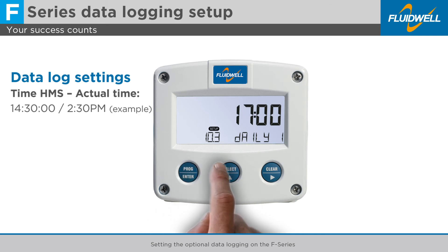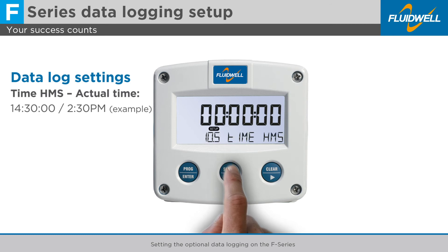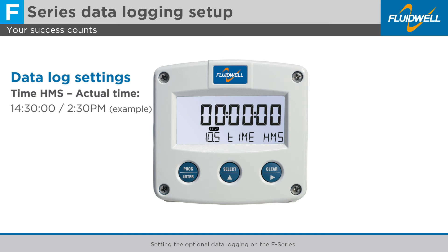Press Select twice to go to Menu 10.5, Time HMS, to set the actual time. We do not change the setting of Daily 2, as we've set the daily logging to only one time each day. Menu 10.5 is the actual time in hours, minutes, and seconds.